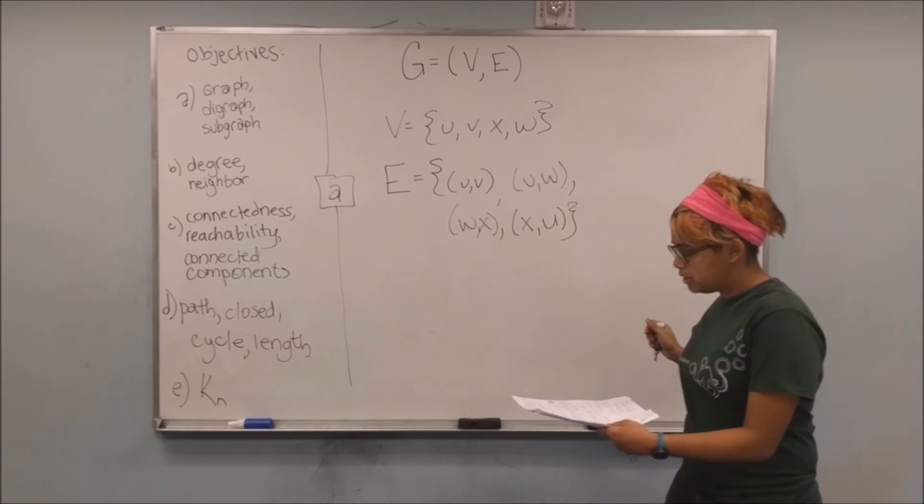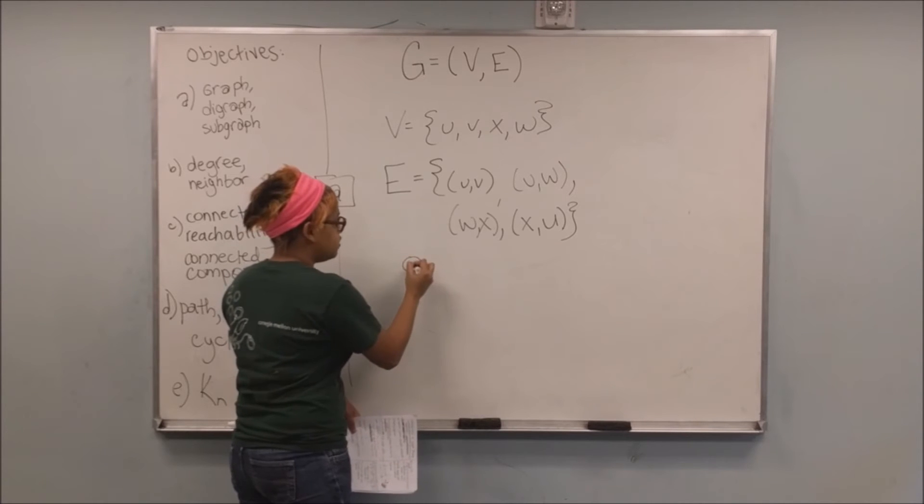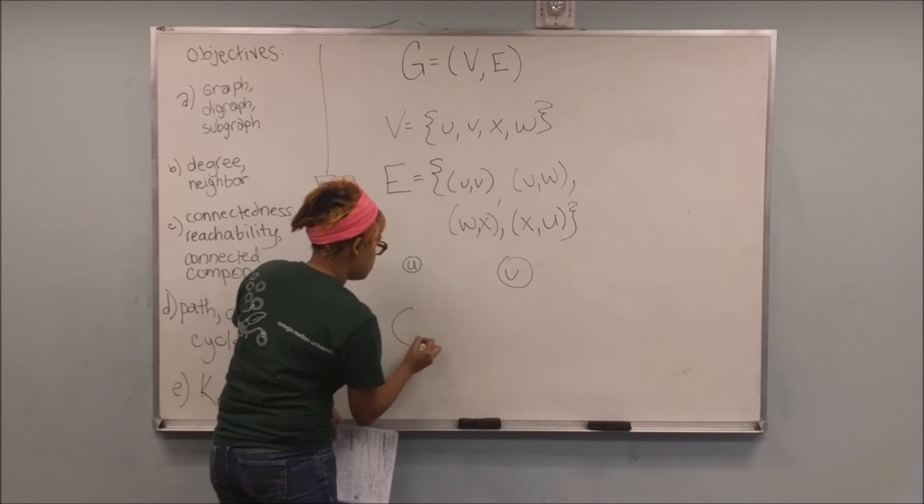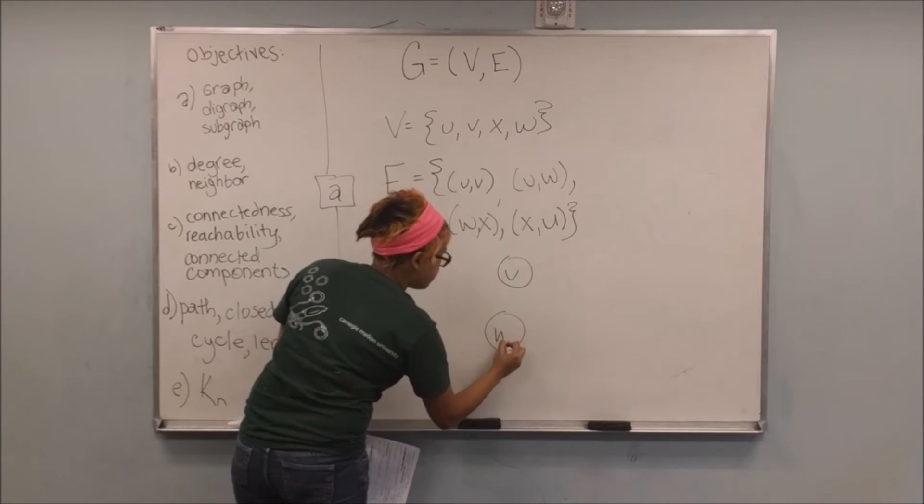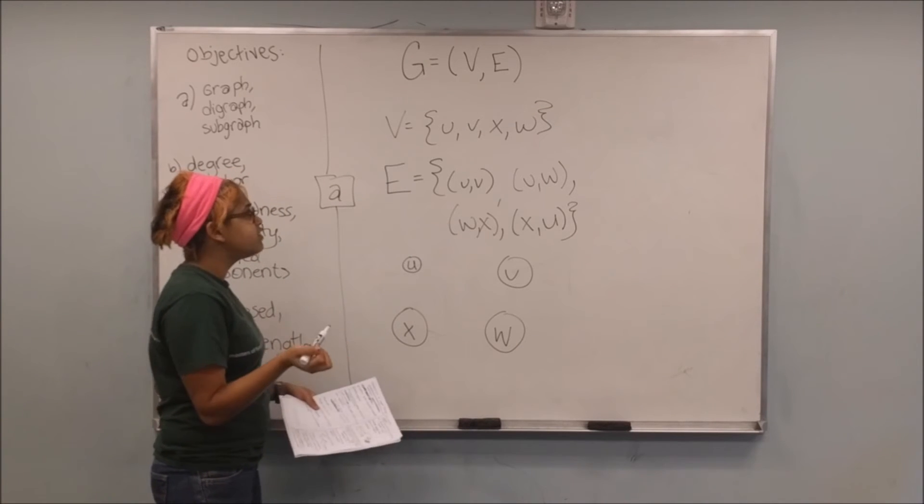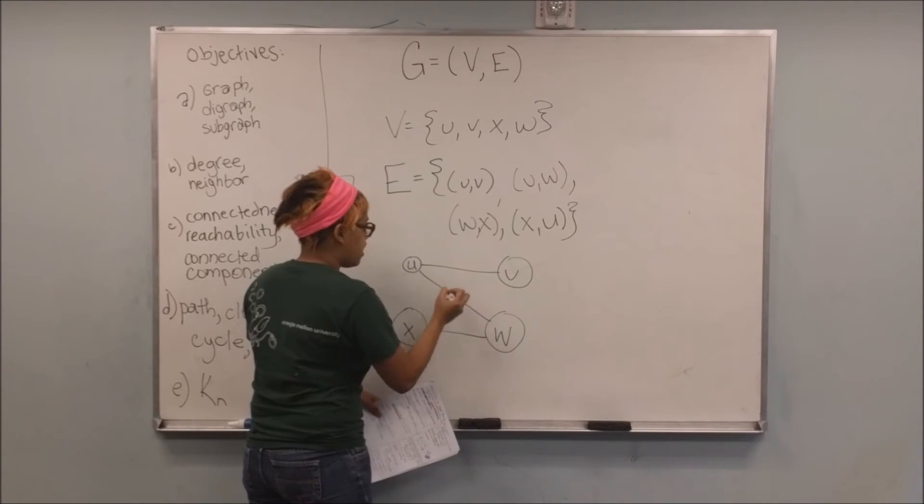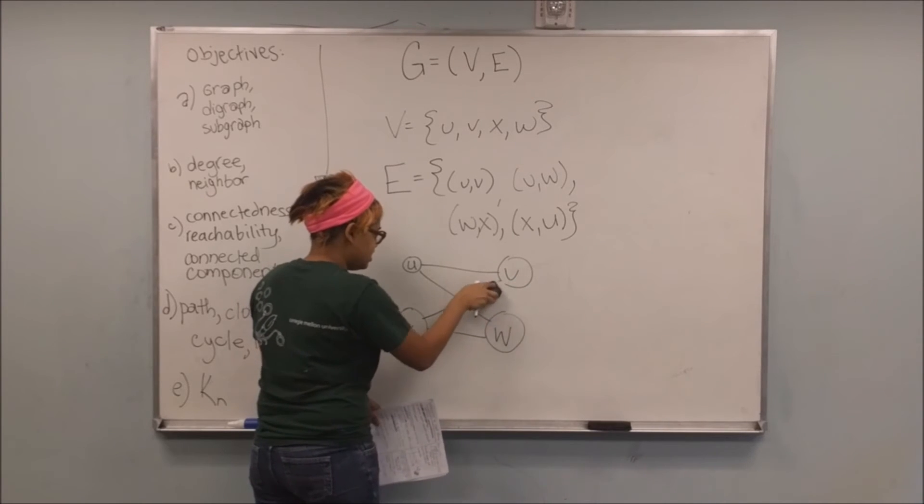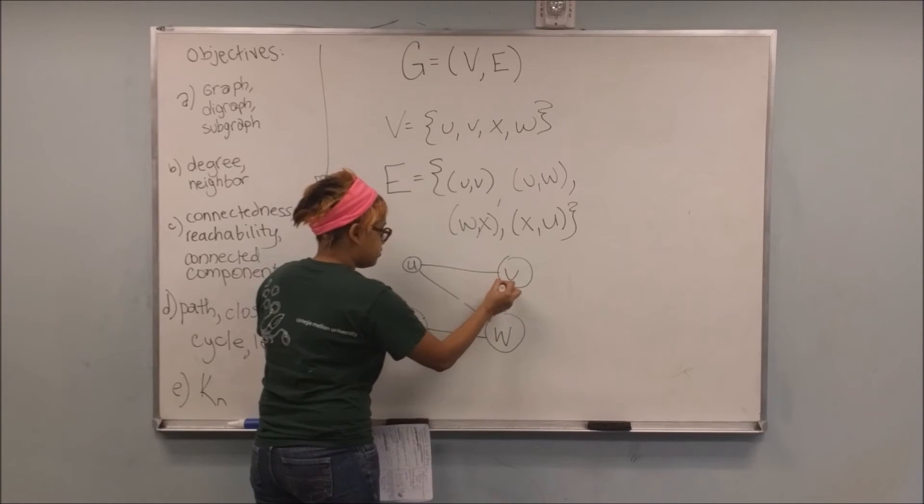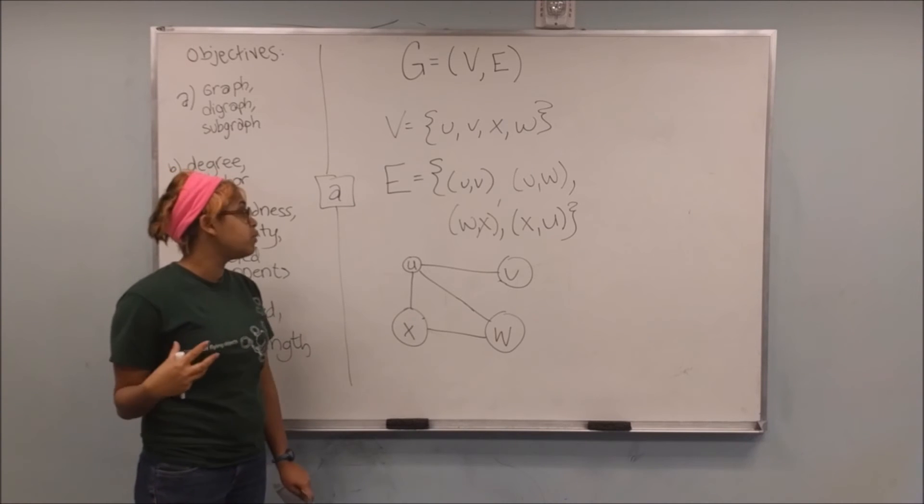And since I have a board here, I can also draw this out in an awesome picture that really shows visually what it means to be a graph. Alright, so in this case, usually the way we represent vertices or nodes is going to be with circles, U, V, X, and W. Alright, and so in this case, I have the edge U,V, I have the edge U,W, I have W,X, and I have X,U. Oh, that's not X,U, that's X,V. Ah, there we go.